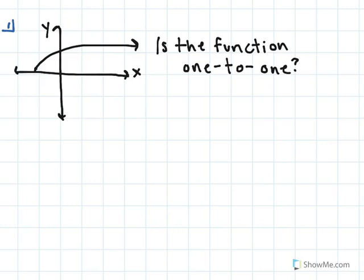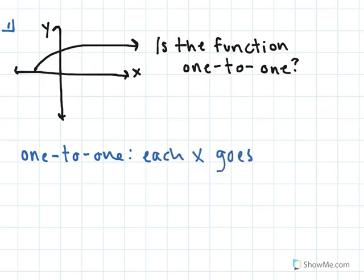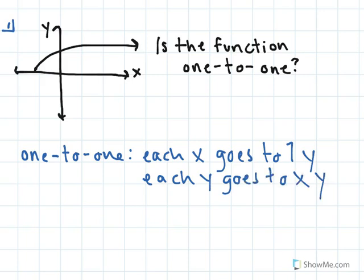In this first question we're given a graph of a function and we're asked if the function is one-to-one. Before we answer this, let's consider our definition of a one-to-one function. A function is one-to-one if each x goes to one y value and each y corresponds to only one x value. In order to test this when we're given a graph, we can perform the horizontal line test. With the horizontal line test, we draw horizontal lines through the graph and if it crosses at more than one point, then it is not one-to-one.